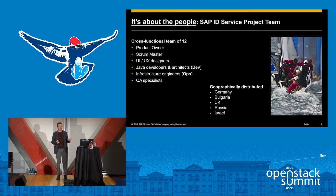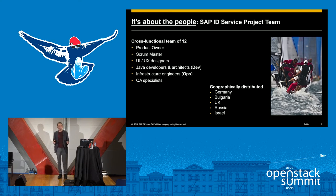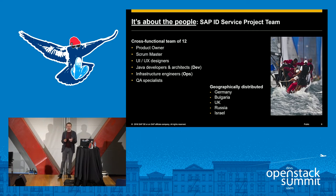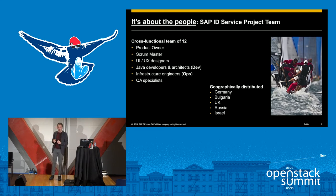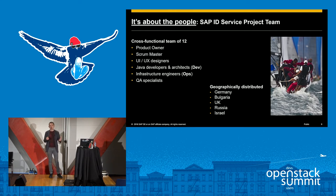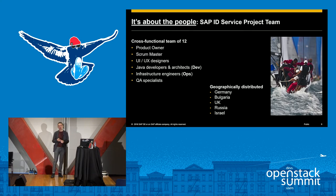One of the first things we did was get rid of these silos. Instead of three different business units, for this pilot project we got everyone into one team: product owner, scrum master, user experience people, Java developers, QA guys, and ops guys. They were technically in different units but we made sure they were in the same room — actually a virtual room — working as part of the same team, spread around the world but roughly within the same time zone. Remote working isn't a problem so long as you're all within a couple of hours of each other; once you get to five or eight hours, someone asks a question and it's the next business day before they get an answer.